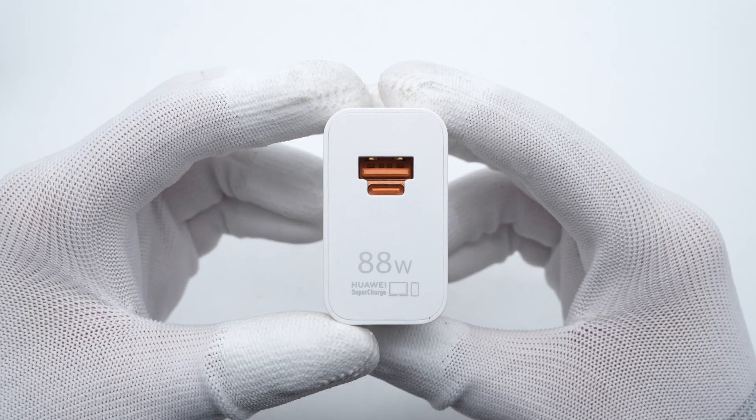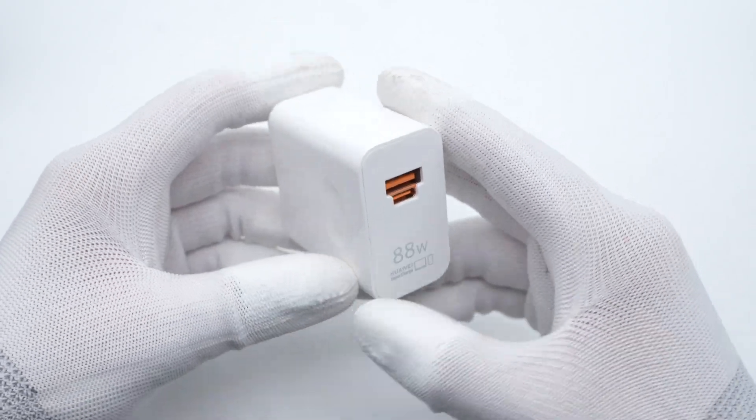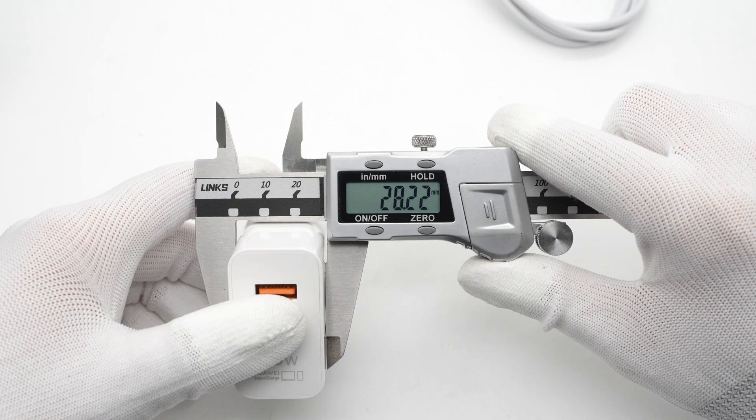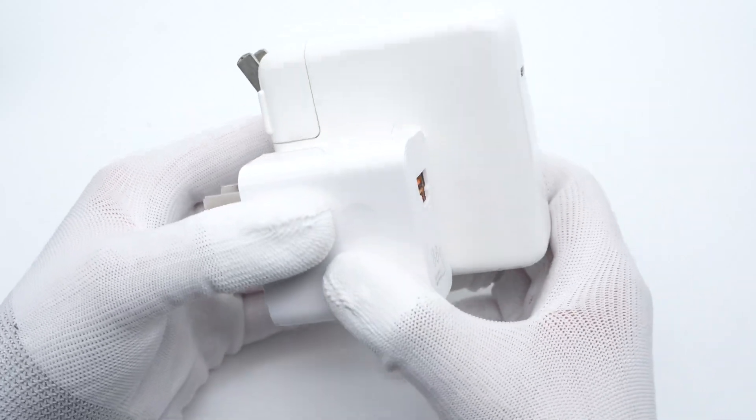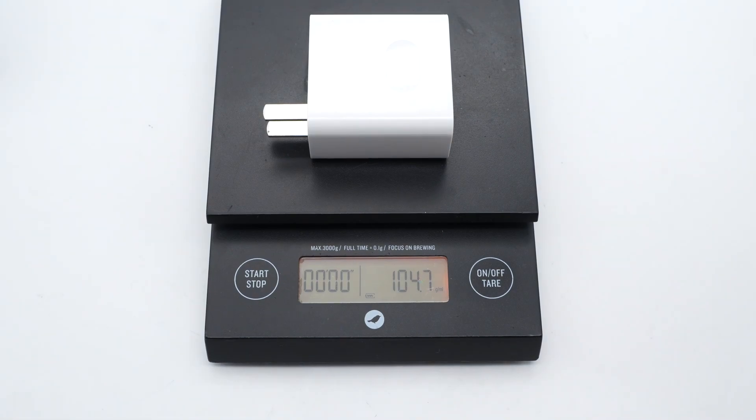Next, we can see that the USB-C and USB-A are side-by-side with no gaps between them. The size of this charger is about 50x50x28mm. Compared with the Apple 96W charger, it's much smaller. And the weight is about 105g.